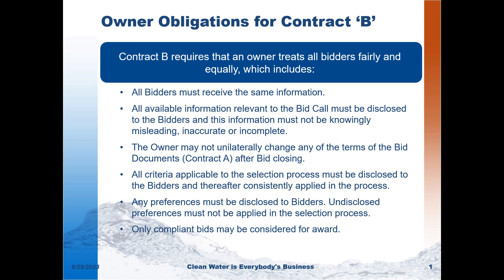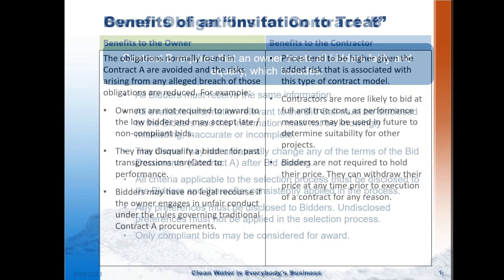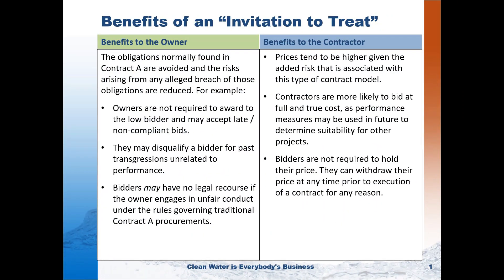In the increasingly common situation where Contract A and Contract B does not apply on a municipal tender, and instead the contract is an invitation to treat, there are advantages to both sides. For the owner, the obligations normally found in a Contract A tender are avoided, and risks arising from any alleged breach of those obligations are reduced. For example, an owner is not required to award a job to the low bidder and may accept late or non-compliant bids. They may disqualify a bidder for past transgressions that are unrelated to performance. And bidders may have no legal recourse if the owner engages in what they deem to be unfair conduct under the rules that would govern a traditional Contract A procurement.